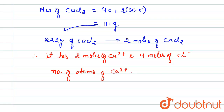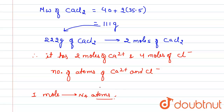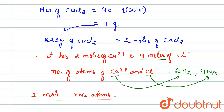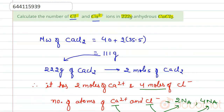Now, to find the number of atoms: one mole contains Nₐ (Avogadro's number) atoms. So for Ca²⁺, two moles gives 2Nₐ atoms, and for Cl⁻, four moles gives 4Nₐ atoms. That is the number of each ion.